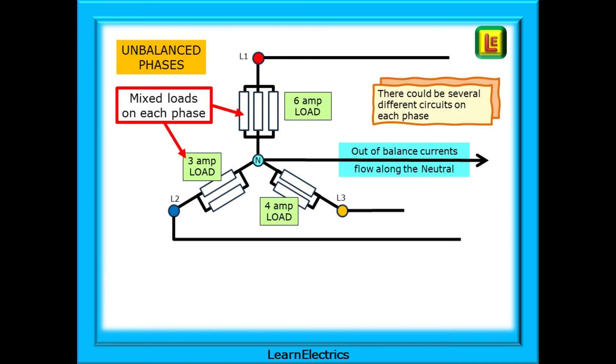But as soon as we have mixed loads, we need a neutral. Each phase here is loaded differently, and during the course of the day, the loads on each phase may change. People will turn lights on and off. The ovens might be turned on, someone switches a computer off, and so on. And all the out-of-balance currents will flow along the neutral conductor.